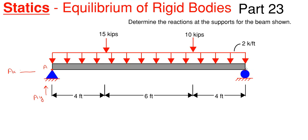And we will have a roller over here, which we are just going to call point B. A roller will only have one reaction, either in the x or the y, and it all depends upon where the surface is located along the roller. Since it is horizontal, our reaction has to be perpendicular to that surface, so it has to be a vertical reaction. So this would be a B sub y reaction.